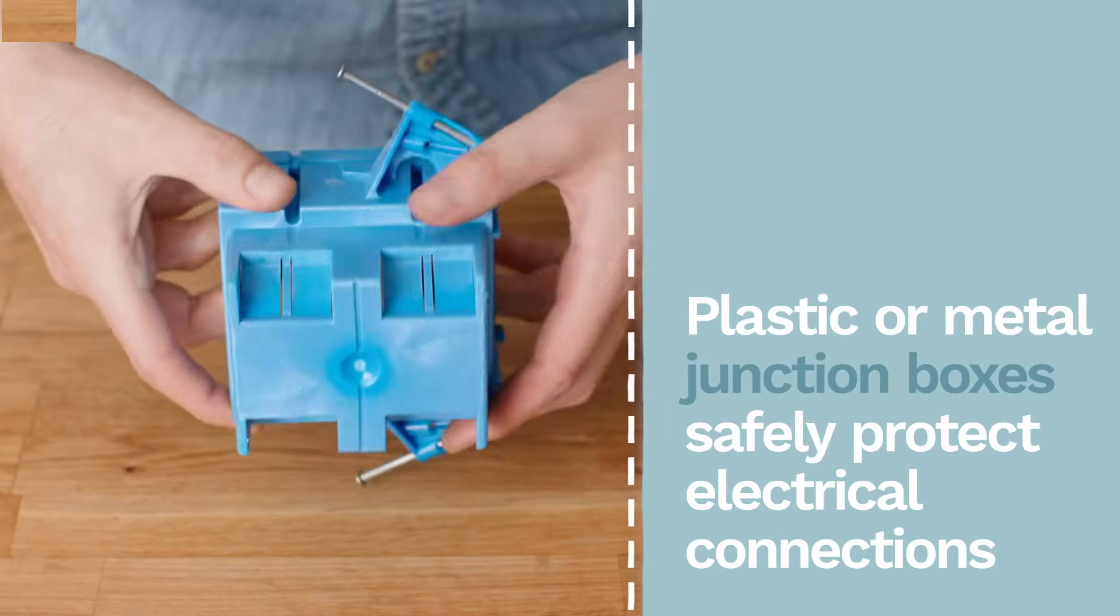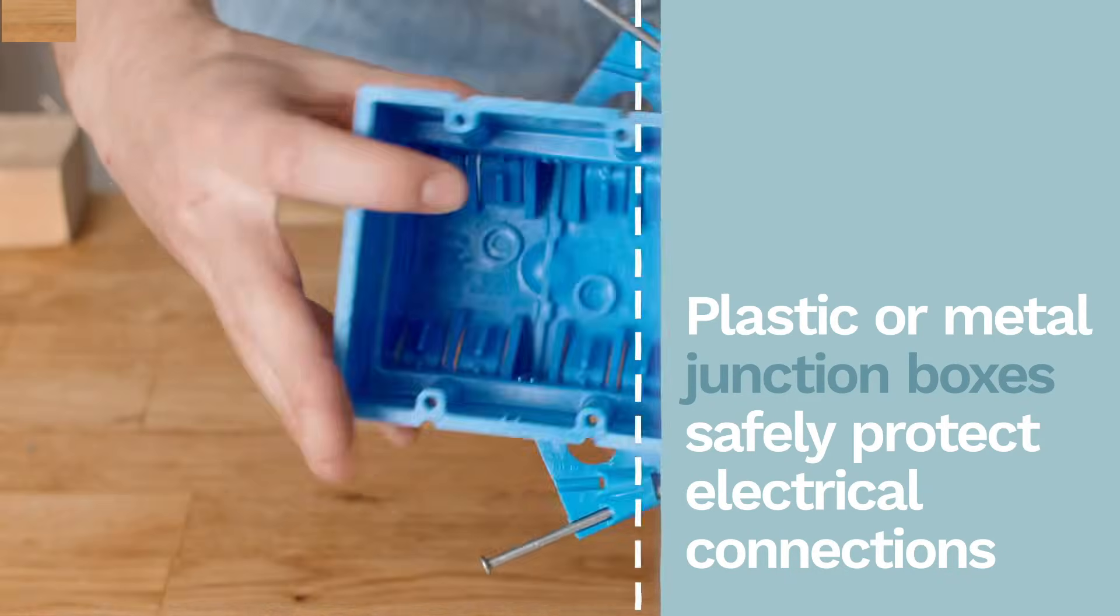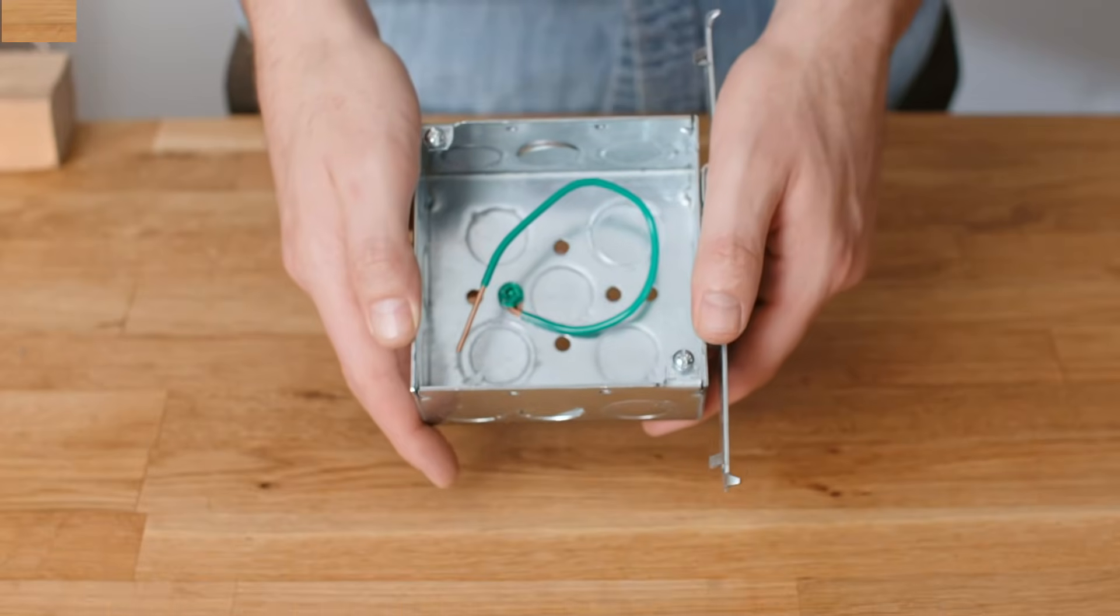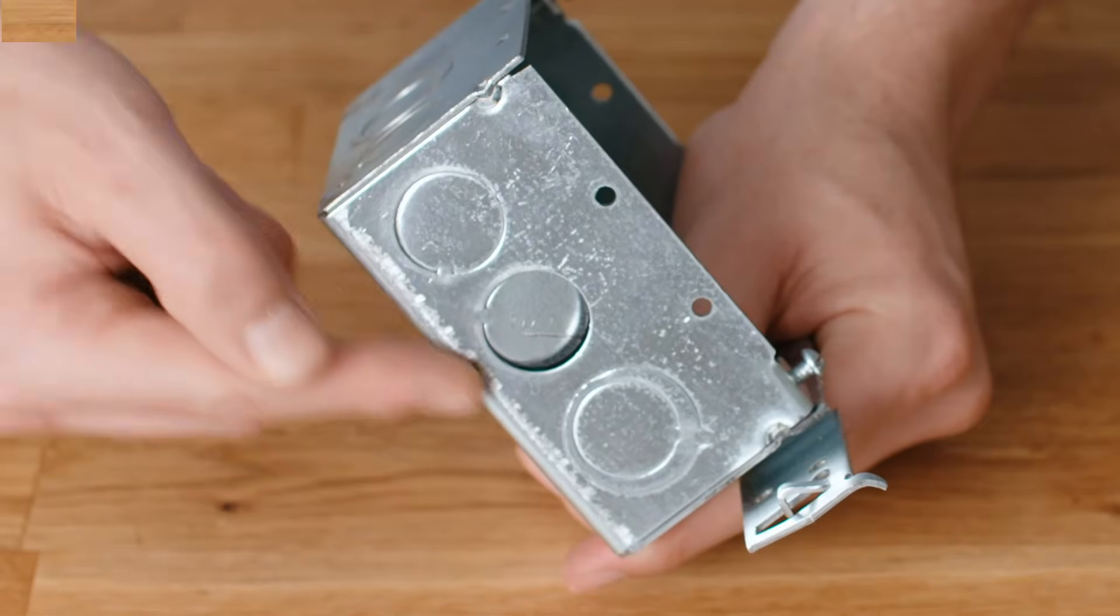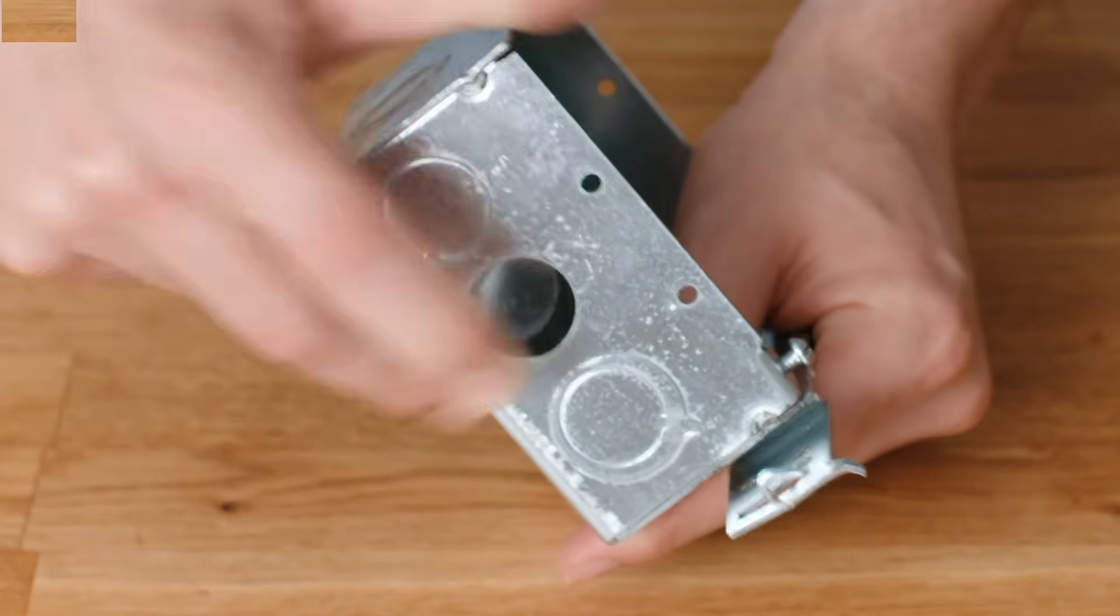A plastic box usually has internal tabs or clamps for securing the electrical cables. You can also add separate clamps if necessary. A metal box should have a ground wire and may or may not have internal clamps. If you need to add a clamp, remove a knockout plug and install a clamp into the hole.